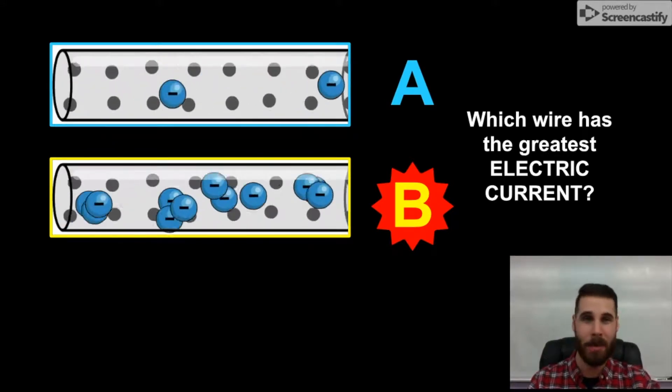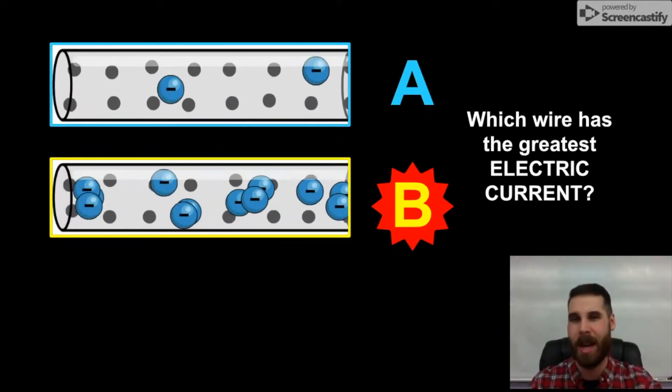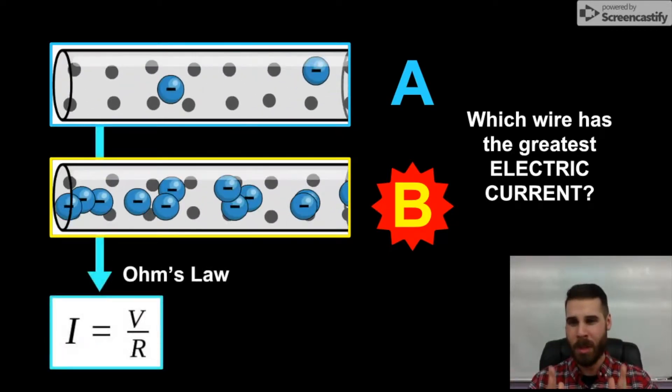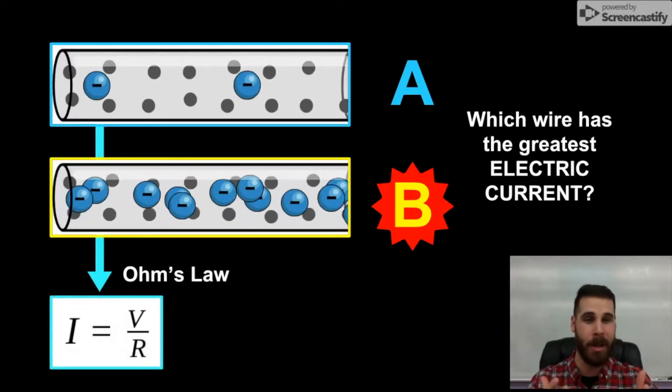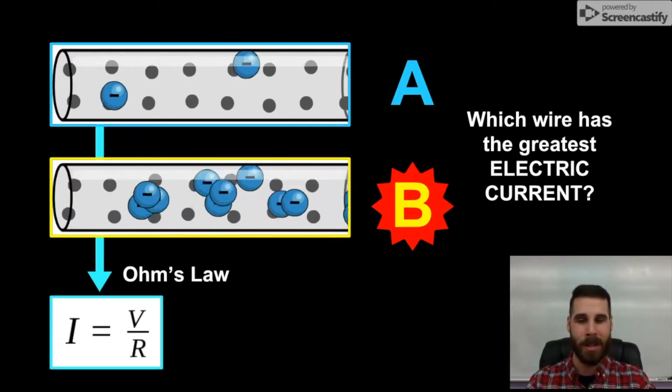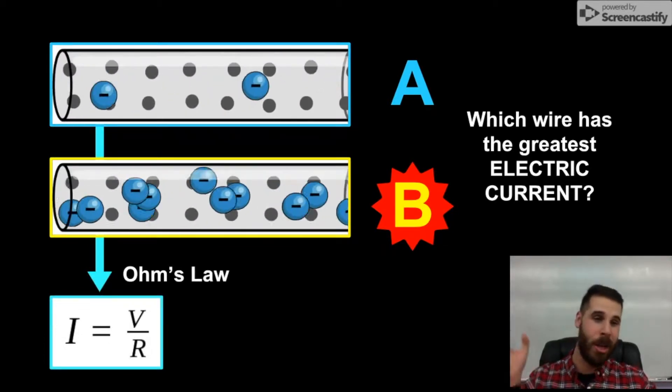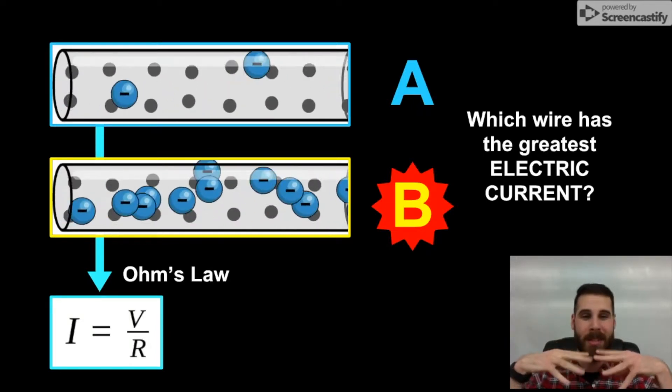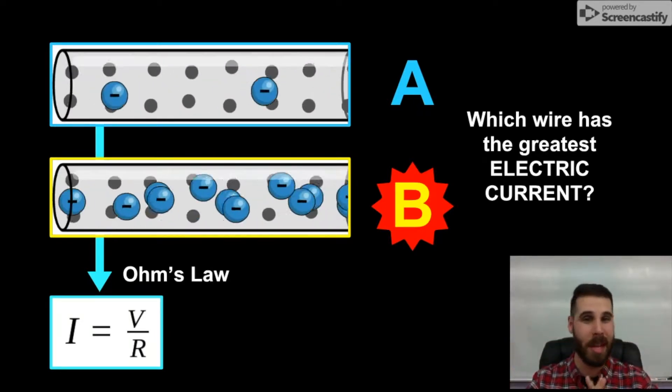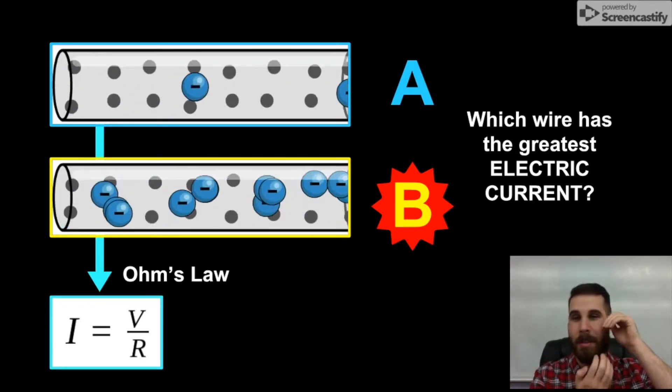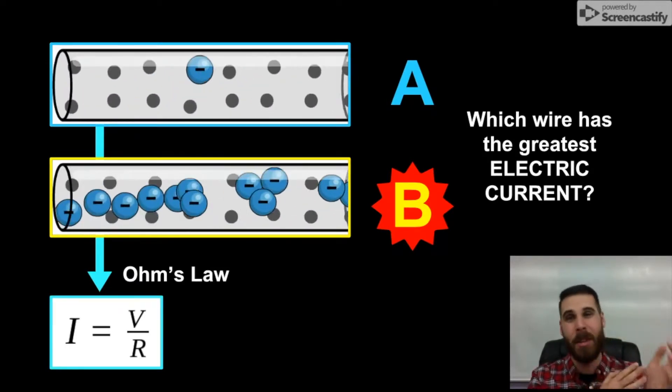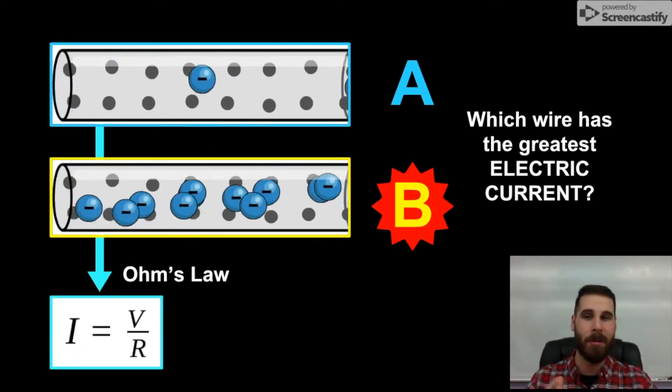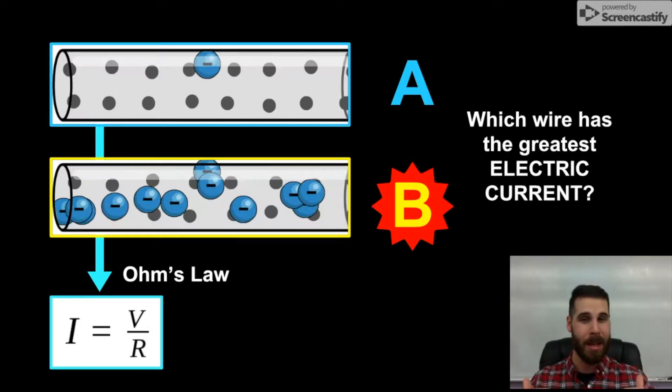One equation we've already learned by this point that you should be able to use to justify the fact that there is more current in B is called Ohm's law. Ohm's law is usually displayed this way, I equals V over R. And I equals V over R tells us that when there is a voltage that is pushing electrons through a wire, there will be some internal resistance that tries to block the electrons and keep them from flowing. And when that voltage and resistance fight each other and are in conflict, the end result is how much current flow we get.